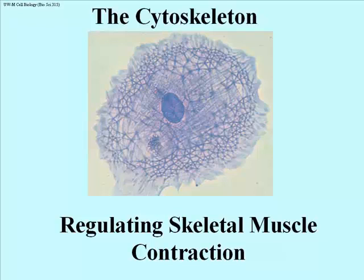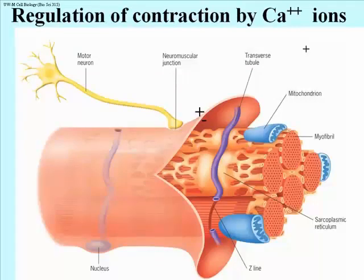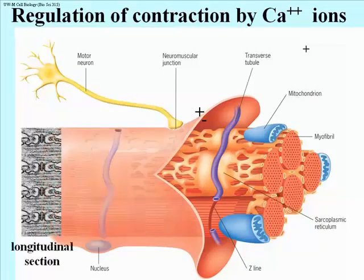This voiceover talks about regulating skeletal muscle contraction, and as you'll see, the regulation is by calcium ion. Let's anchor the cartoon to an EM picture, a longitudinal section showing what the myofibrils look like, with the sarcoplasmic reticulum and T-tubules showing as well.